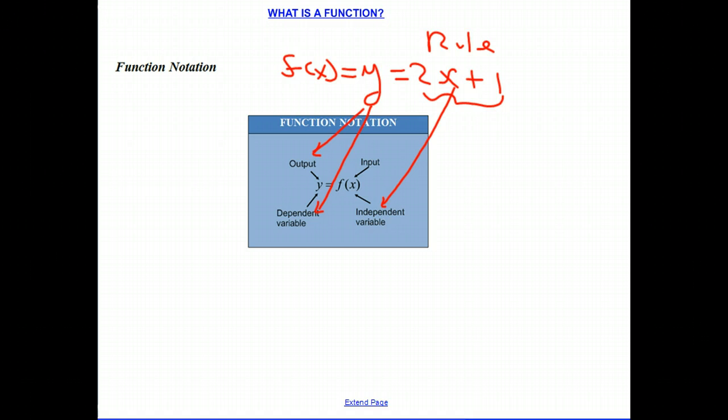For example, using this notation, if I said let's find f of 3, we know the rule is multiply 2 times x plus 1. We're saying x is 3, so the rule says multiply the input 3 times 2 and add 1. I could do 6 plus 1 or 7.